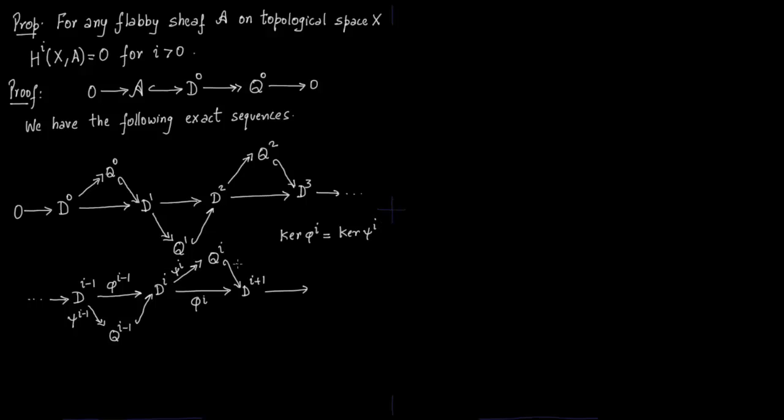Notice that kernel of PhiI is nothing but kernel of Var PhiI, because the map from QI to Di plus 1 is injective. So what is kernel of PhiI? Kernel of PhiI is nothing but QI minus 1. Why? Because we have a short exact sequence from QI minus 1 which injects into Di and we have a surjective map from Di to QI. So we have this short exact sequence which I show by appending zeros in rust color. Therefore kernel of Var PhiI is nothing but QI minus 1.